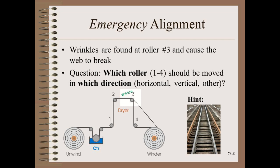Moving roller three horizontally might cause out-of-plane twisting in the span between rollers three and four, but this is not a major concern because the web is very tolerant to twisting. More practically, we would scribe the bearing housing so we could put it precisely back where it was. However, the situation changes enormously if the web goes directly from roller three onto the winding roller. In that case, a horizontal move of roller three would cause in-plane bending in the three-to-winder span. We would therefore make a horizontal move of roller two instead.